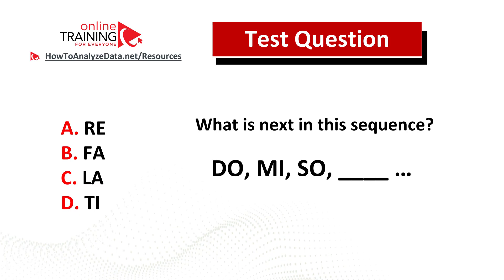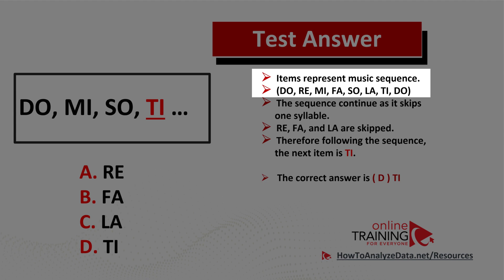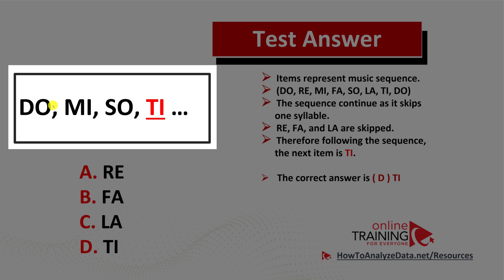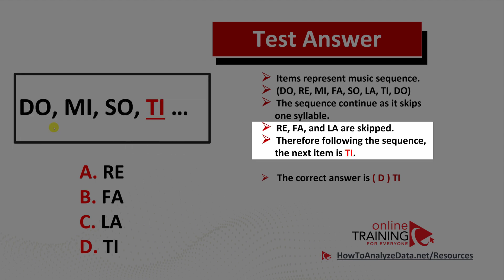Did you figure out the solution? Let's continue to see how we can solve this challenge together. As you might have figured out, the items represent a music sequence: DO, RE, MI, FA, SO, LA, TI, DO. If we look at the sequence, we notice that some items are missing — RE, FA, and LA are skipped. So the next item in the sequence will be TI, and the correct answer here is choice D.